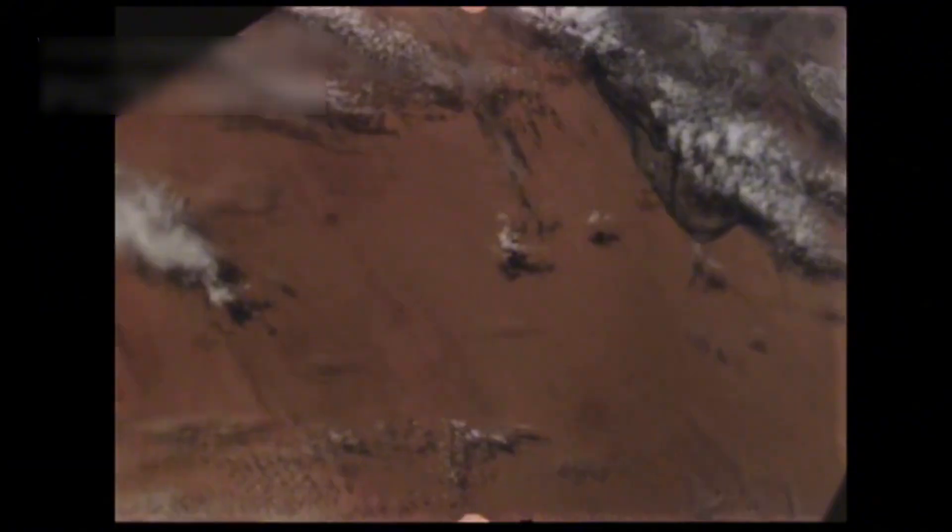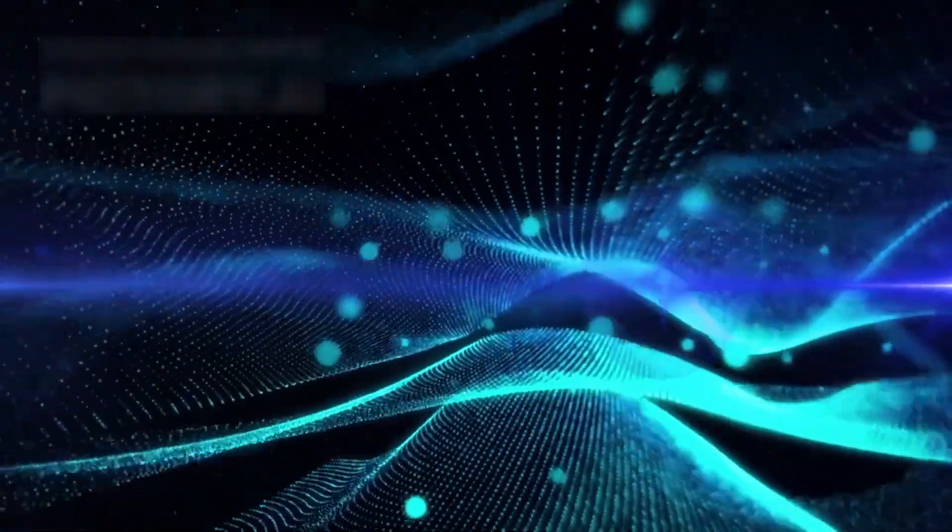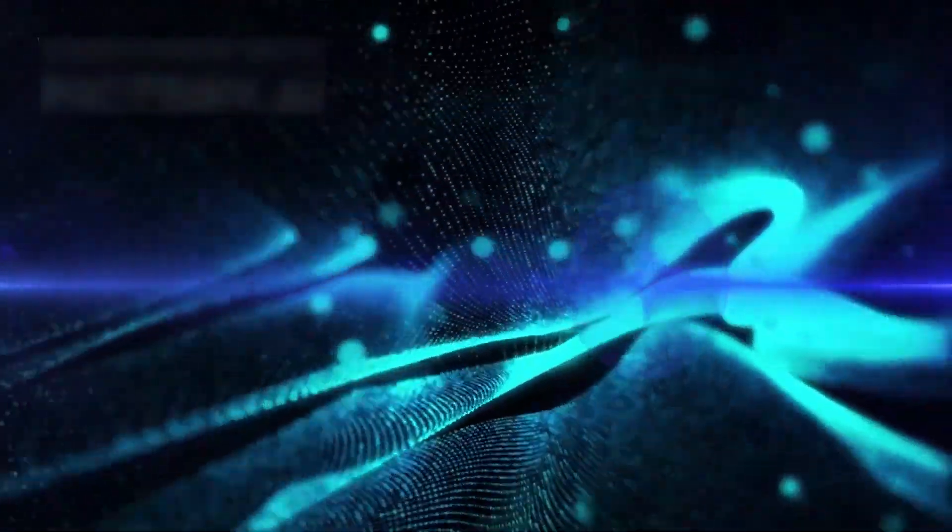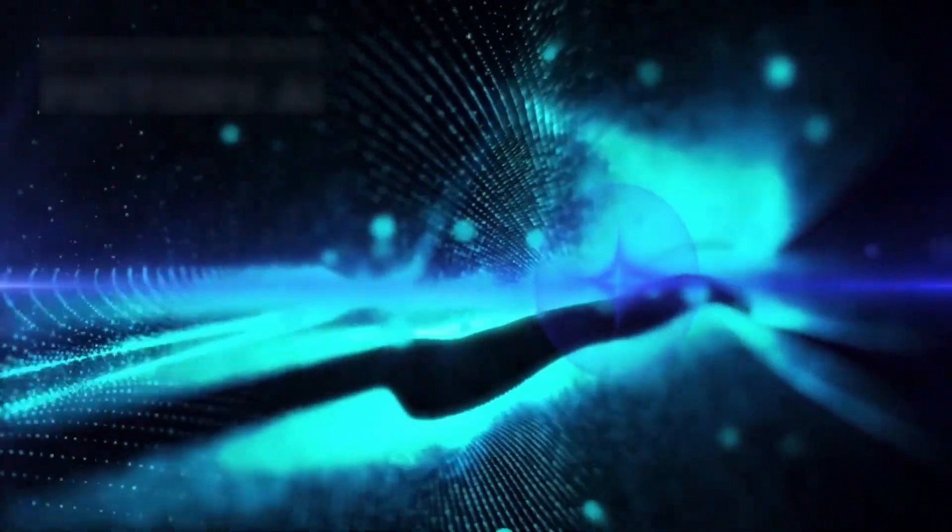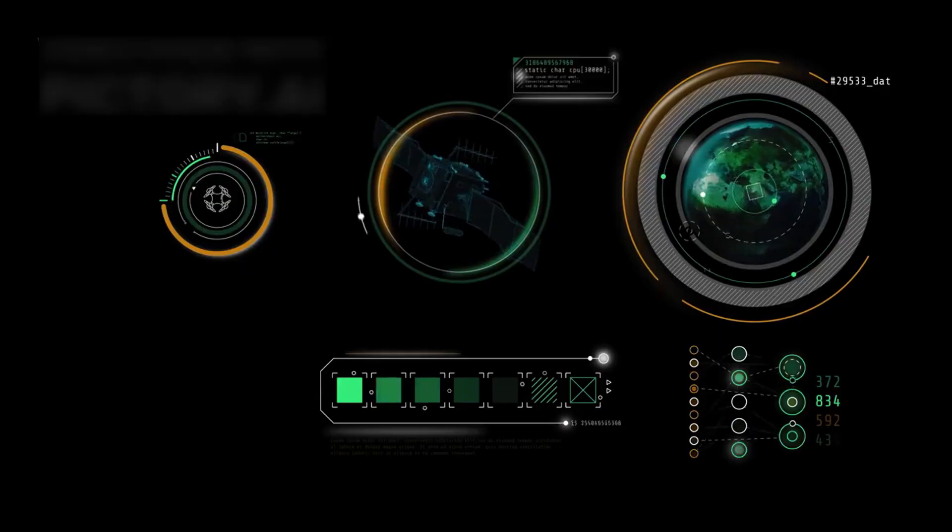Voyager 2, its twin, is also deep in space, almost 20 billion kilometers from Earth. It too sends data about cosmic rays, plasma, and magnetic waves. Some findings are predictable, others defy explanation.